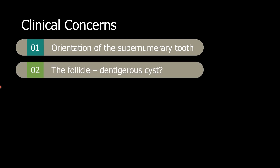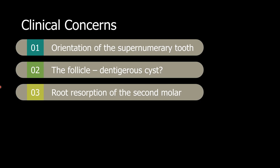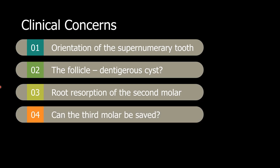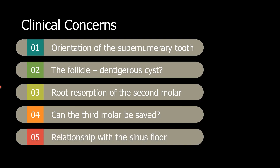We have several clinical concerns discussed about this radiograph. First, we want to know the orientation of the supernumerary tooth or the odontoma — whether it's closer to the buccal cortical plate or closer to the palatal cortical plate. The second concern was the follicle of the supernumerary tooth as well as the follicle of the third molar — if the follicle is large, can it be a dentigerous cyst? We are also worried about the root of the second molar and whether it is resorbed by contact with the third molar crown. We also want to know if the third molar can be saved, and whether the third molar is in contact with the sinus floor and the status of the sinus floor.